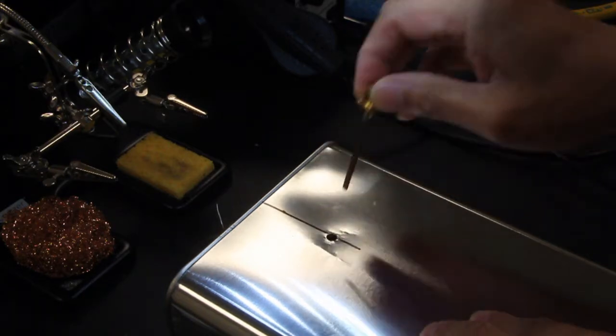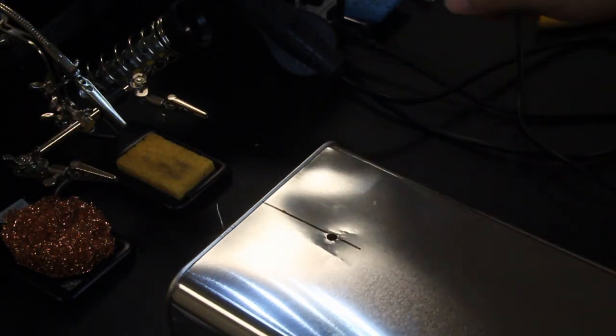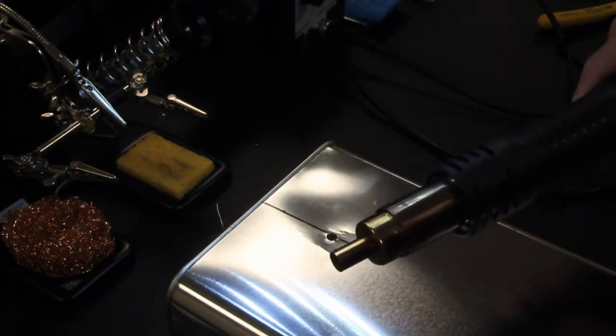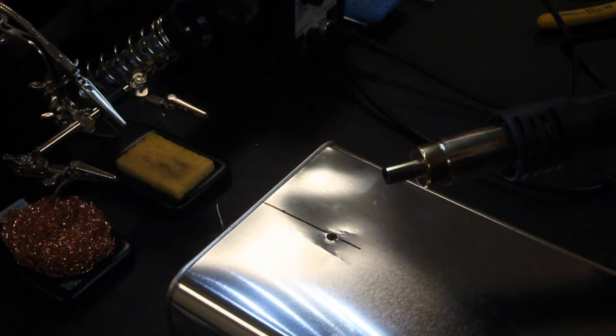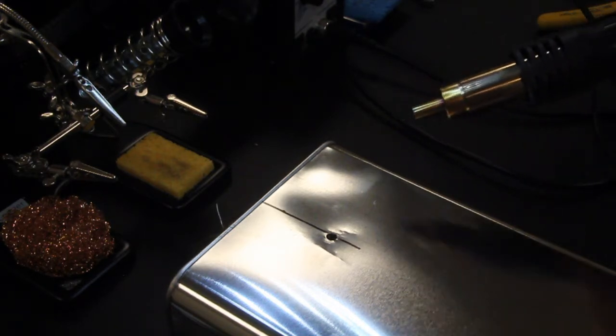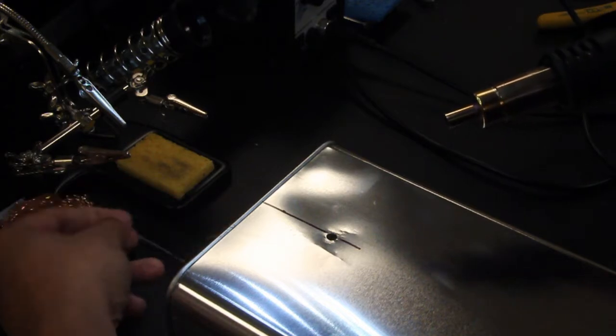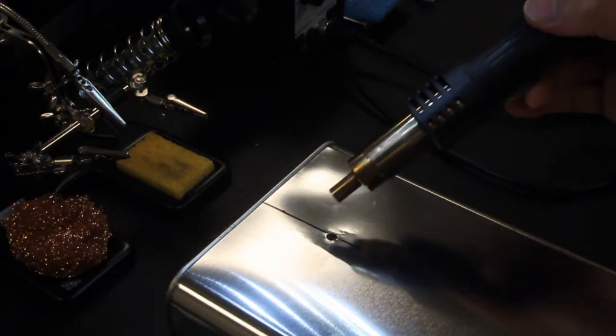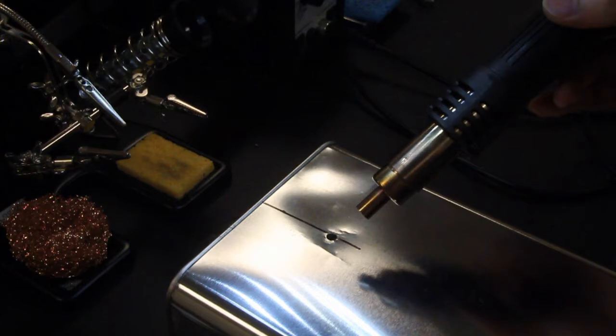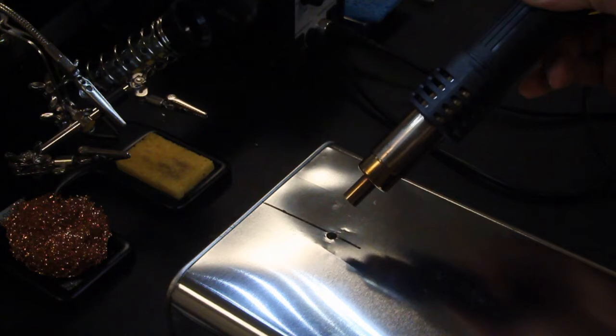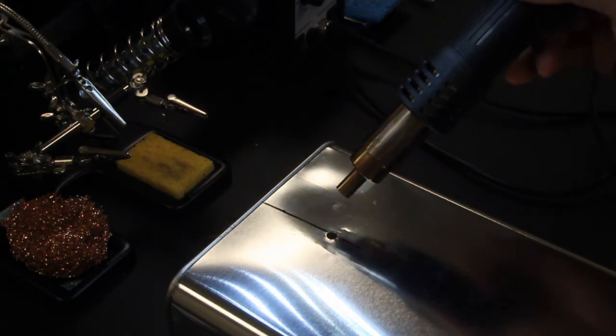The key here is to use your hot air gun. You're going to let it heat up the can and put down a ring of solder around the hole. Roughly about 350 degrees Celsius is plenty.